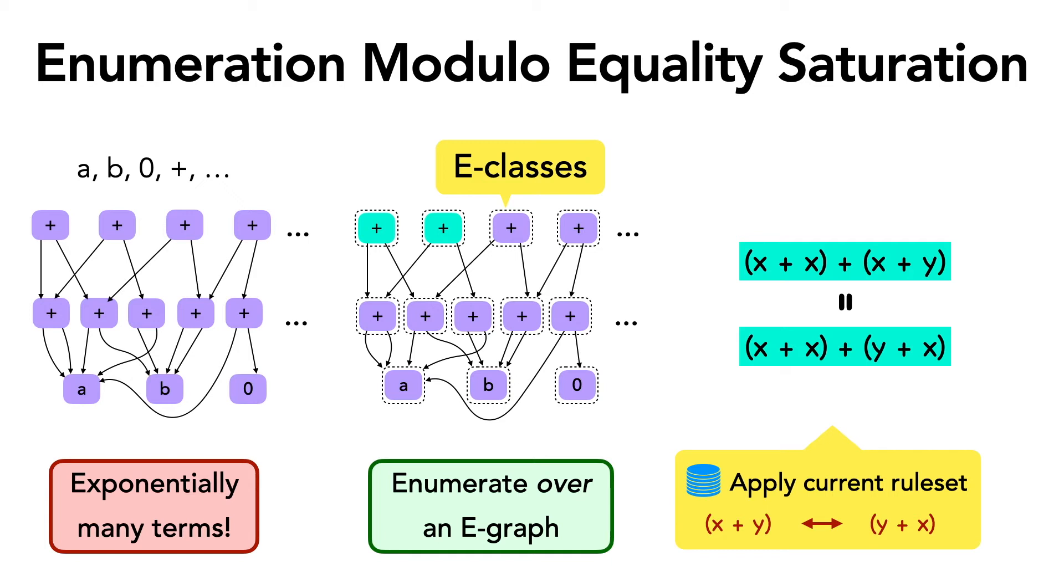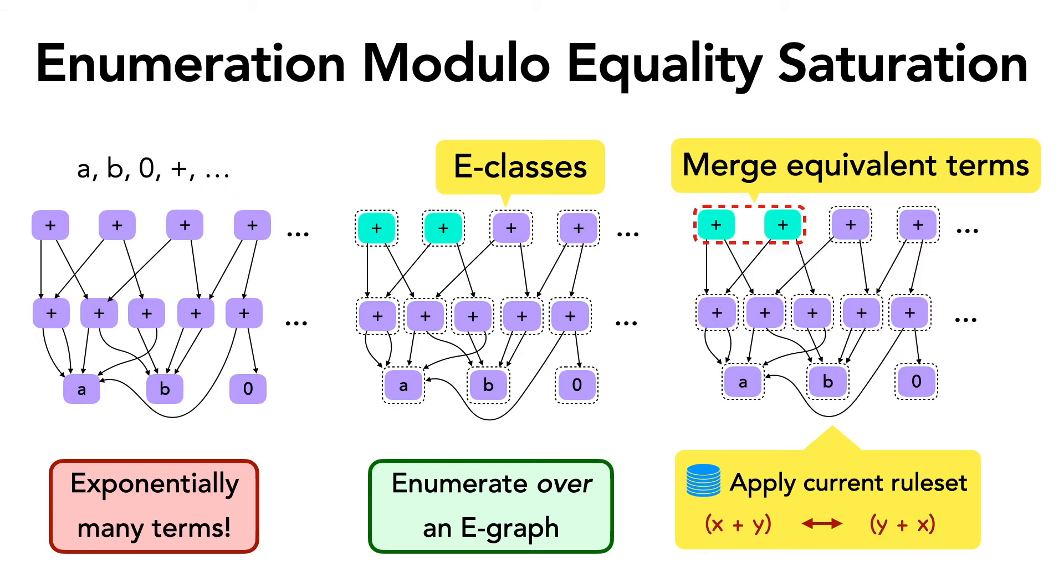For example, consider the two equivalent terms x plus x plus x plus y and x plus x plus y plus x. And these are the two terms that we saw previously. And consider a scenario where Ruler has already learned commutativity. So in this scenario, Ruler will apply the commutative rule on the term e-graph to detect that these two terms are in fact equivalent. What that means is that the e-classes for these two equivalent terms will get merged by equality saturation.